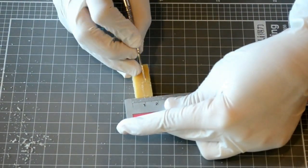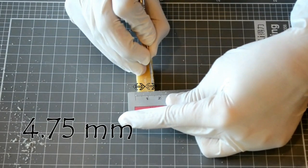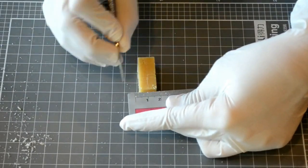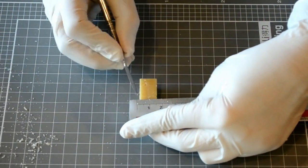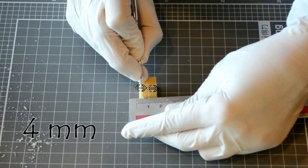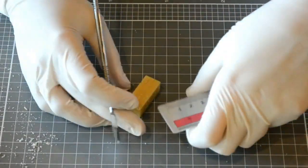For the mesiodistal dimension of the crown, mark 4.75 millimeters on each side of the central line at the incisal edge. This adds up to 9.5 millimeters. The mesiodistal dimension of the crown at the cervical portion is 8 millimeters. Carve this by following the previously mentioned technique and plot 4 millimeters on each side of the vertical line.